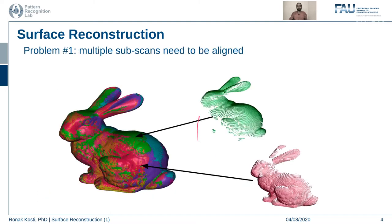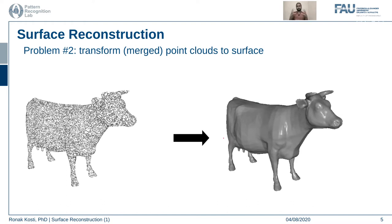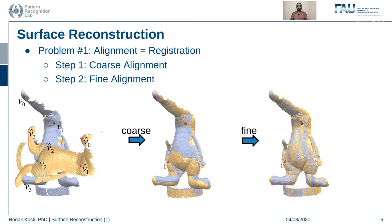We have sub-scans or multiple scans — shown as green and red ones — and we merge them to form a more continuous, solid, rigid surface of the object. Surface reconstruction has multiple problems. The first problem is that multiple scans need to be aligned. The second problem is how to convert this dense point cloud to a surface. For this part of the lecture, we will focus only on the first problem: alignment or registration.